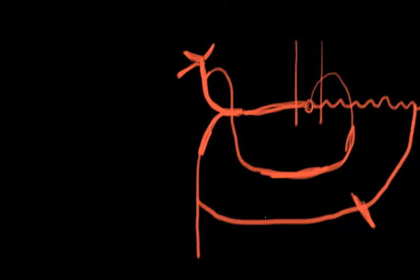One more branch here is the superior pancreaticoduodenal artery — quite a mouthful. The reason for the name is that we've got the pancreas right in here and the duodenum in there too, and this artery is supplying both of them. Hence: pancreaticoduodenal.